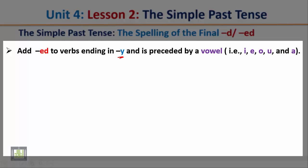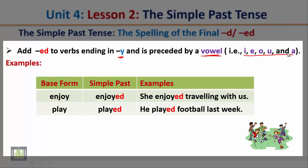Rule 4: add -ed to verbs ending in -y that are preceded by a vowel. For example, 'enjoy' ends in -y preceded by the vowel -o, so add only -ed: 'She enjoyed traveling with us.' Similarly, 'play' ends in -y preceded by the vowel -a, so we add -ed: 'He played football last week.'